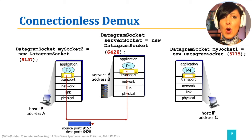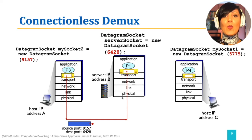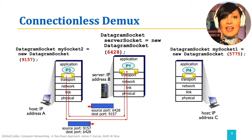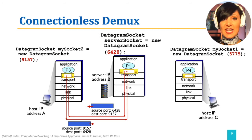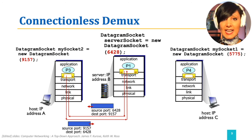Can you guess why we use the source port in the segment? When host B wants to reply to host A, while making the reply segment, the source port from the received segment — 9157 — is now used as the destination port on the outgoing segment to process P3 running the application on host A. Therefore, segments from process P1 on host B to process P3 on host A have source port 6428 and destination port 9157.